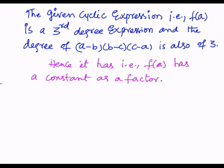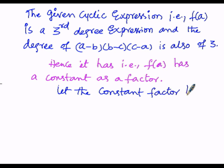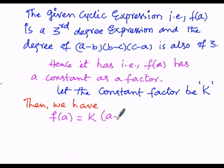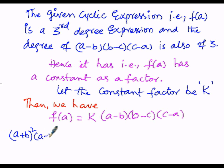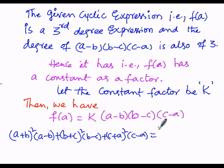We suppose that constant factor to be k. Then the cyclic expression can be written as: f(a) = k · (a - b)(b - c)(c - a). The given expression f(a) is: (a + b)^2 · (a - b) + (b + c)^2 · (b - c) + (c + a)^2 · (c - a) = k · (a - b)(b - c)(c - a).